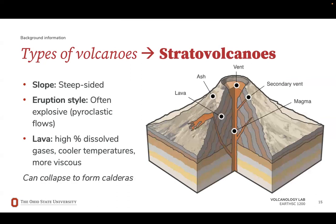Stratovolcanoes are typically steep-sided, cone-shaped volcanoes that have violent explosive eruptions. The lava ejected is highly viscous or extremely resistant to flow — much cooler and more viscous than that of shield volcanoes. The explosive nature of stratovolcanoes is due in part to the high percentage of dissolved gases and magma moving through the vents of the volcano. This type of volcano can also collapse to form calderas.